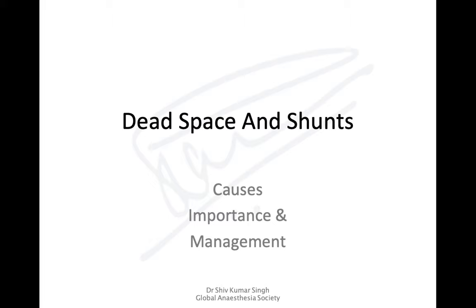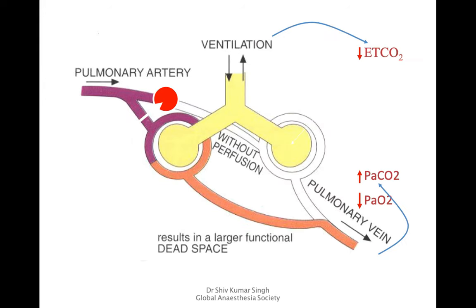There is more to oxygen therapy than just increasing FiO2 — we also need to understand dead space and shunts. When there is any blockade of circulation, the ventilation to the part that circulation supplies is wasted — this is wasted ventilation, constituting functional dead space. Anatomical dead space is fixed for all of us, around 150 mls, representing the transport zone of the respiratory system.